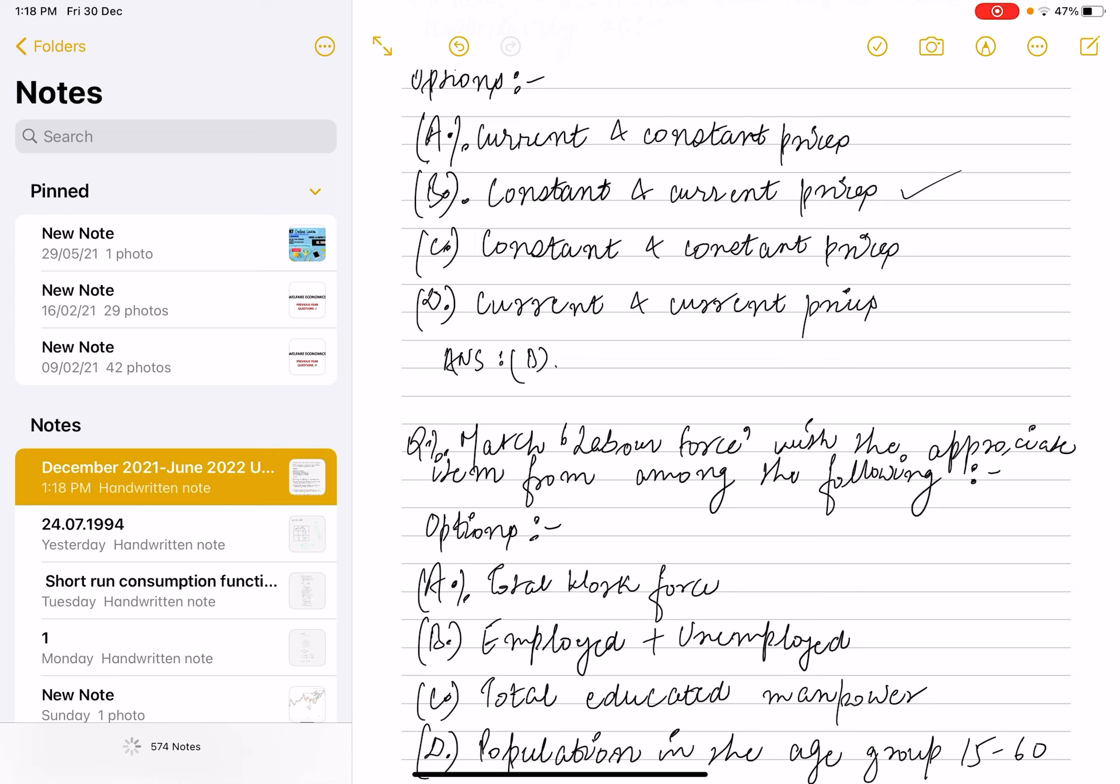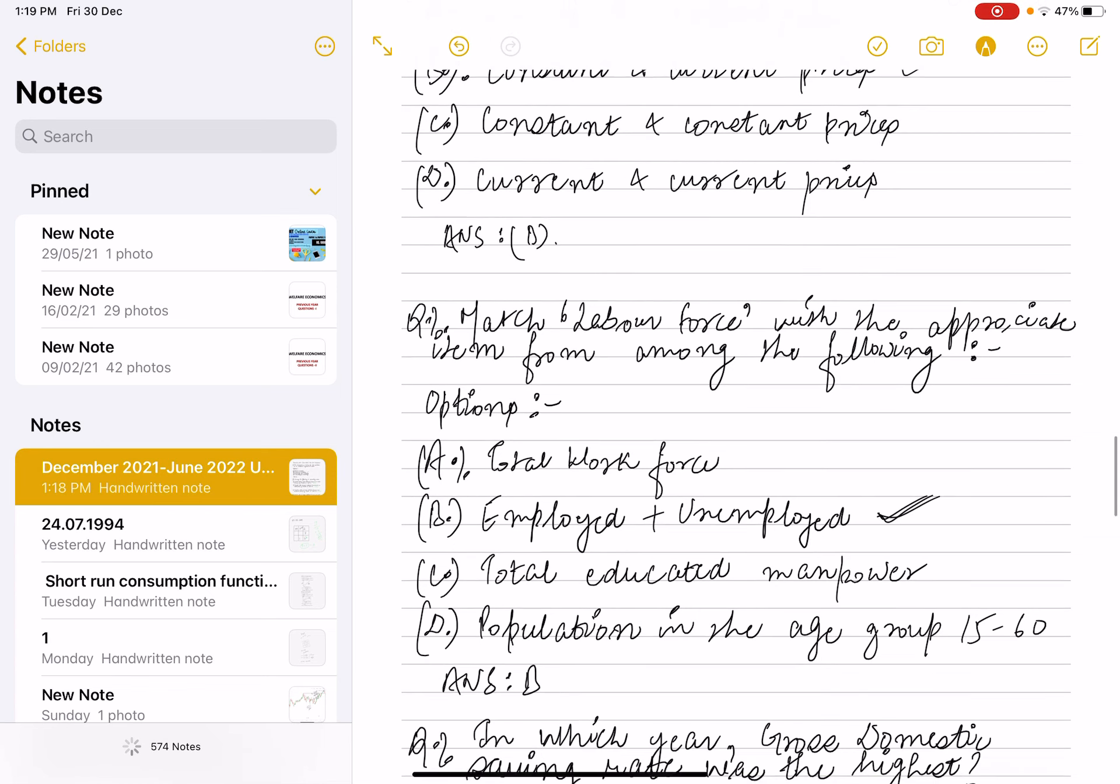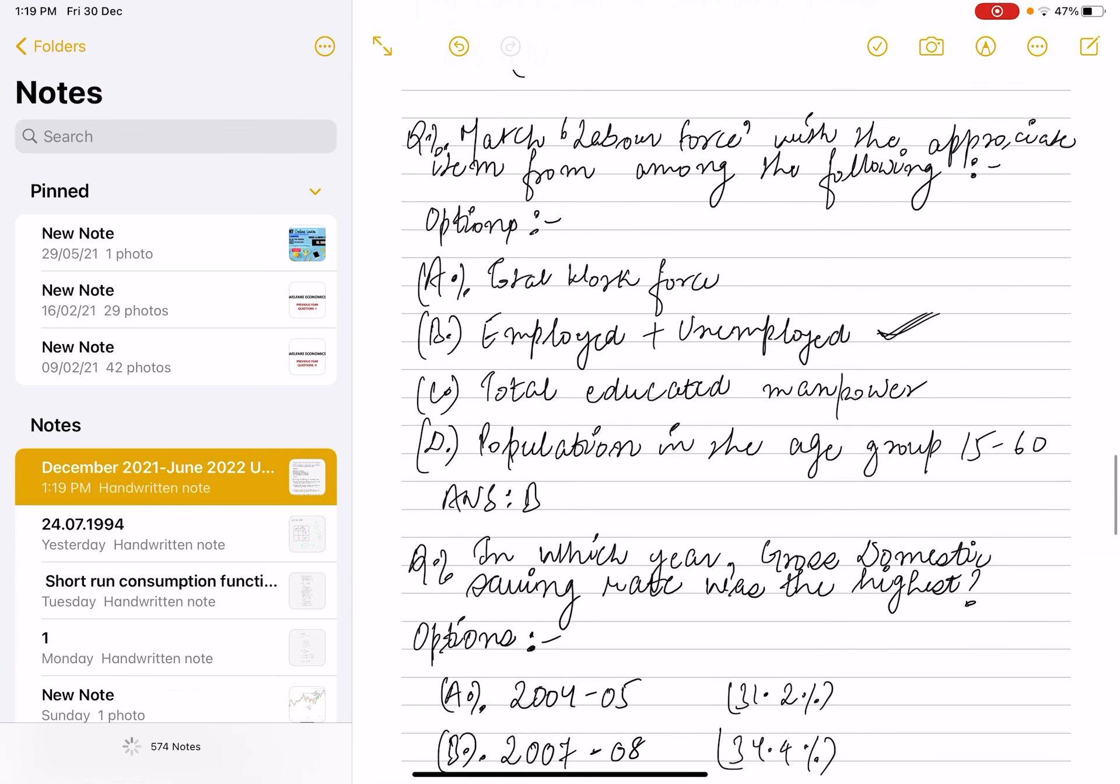or option C which says total educated manpower, or option D which is population in the age group 15 to 60. The correct answer is employed plus unemployed - when you add these together you get labor force. Okay, so option B is the correct option.